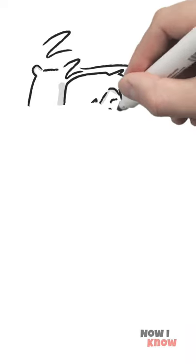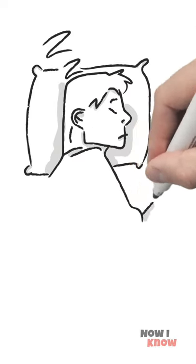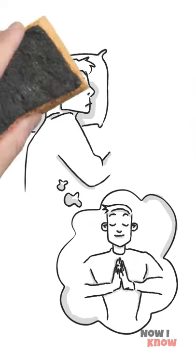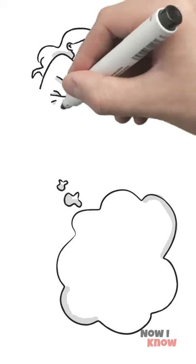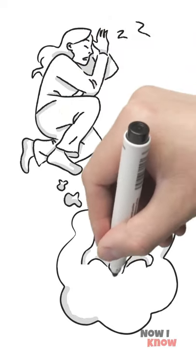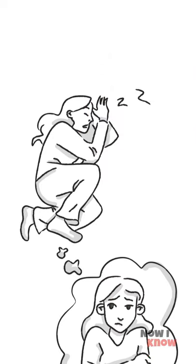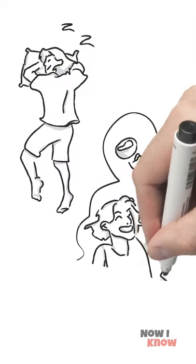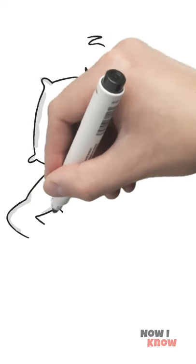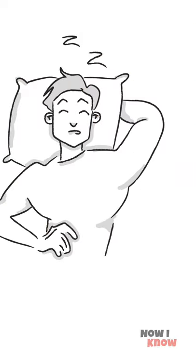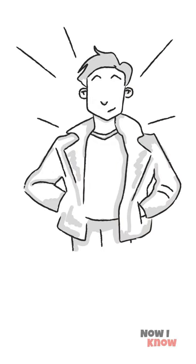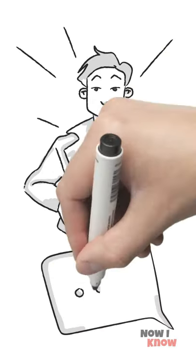I can tell all about you just from your sleep position. Love lying on your side? You're a calm and reliable person. Prefer the fetal position, then you often feel the need to be protected and understood. If you'd sell your soul to sleep on your stomach, you're impulsive and like taking the initiative. Lastly, if you sleep on your back, you're most likely a positive person who loves life and being the center of attention. Let me know in the comments if I nailed it.